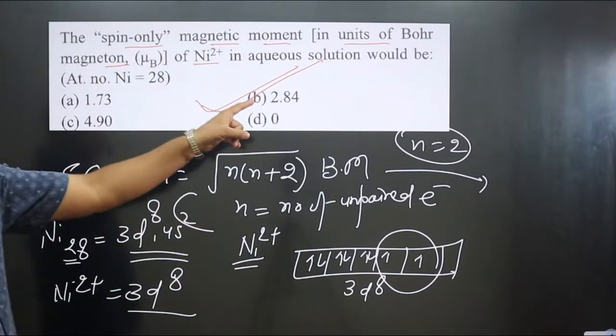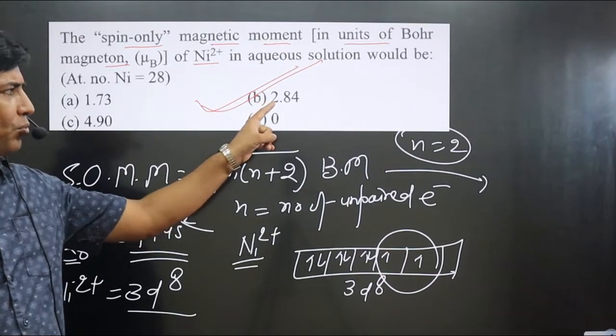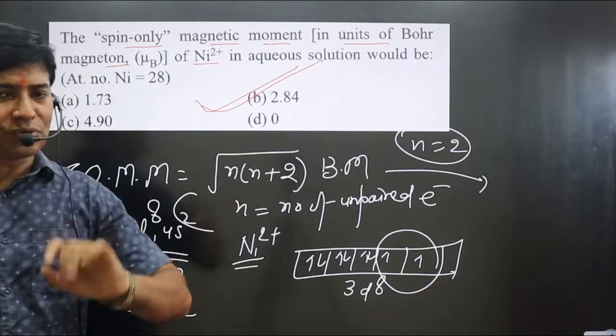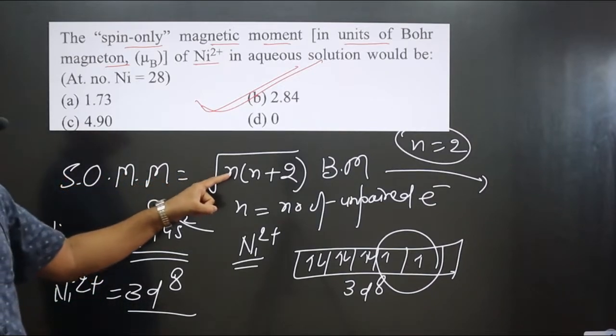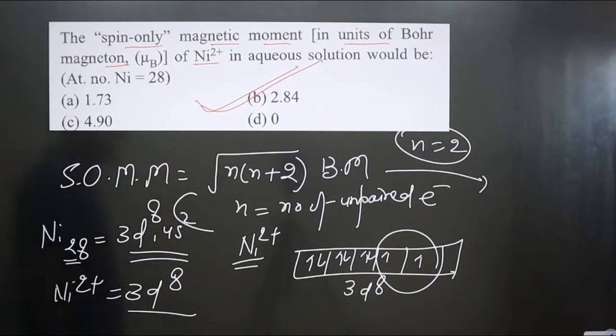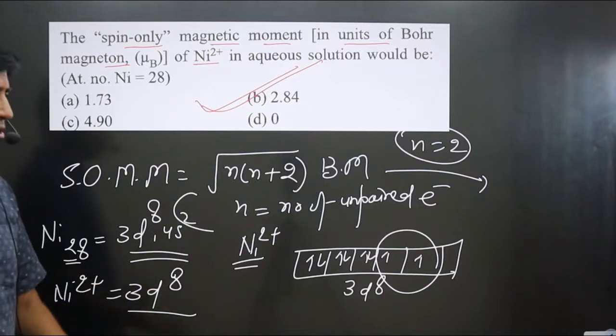In this case, you can see the value is starting from 2, 2 point something, why? Because n value is 2. So as I said in the start, spin-only magnetic moment depends on only n value. Based on that we can answer this question.